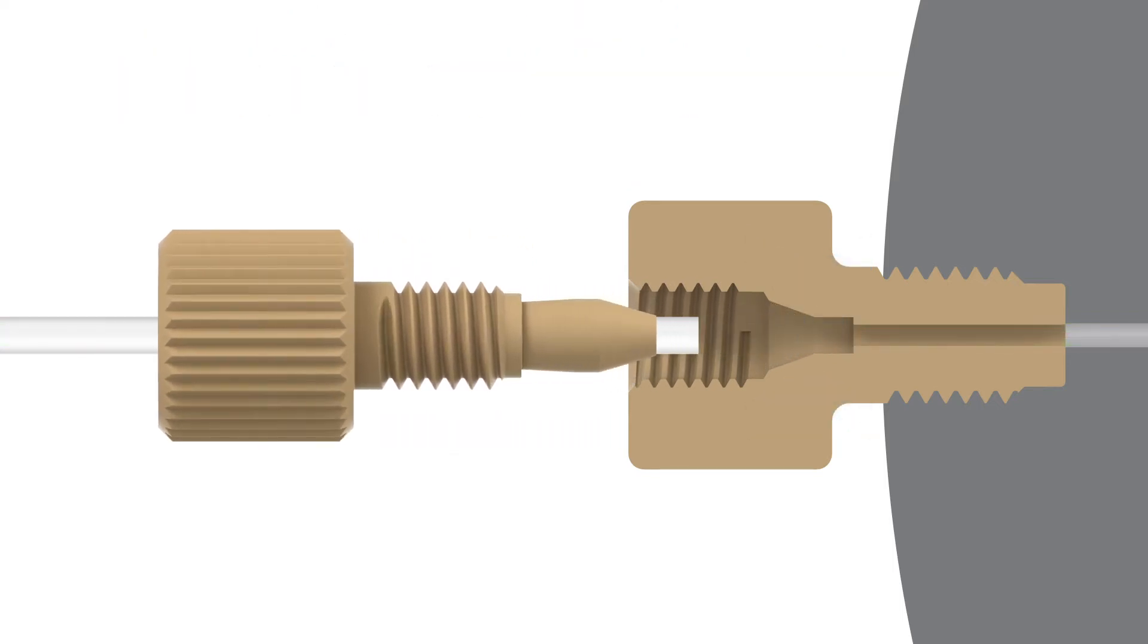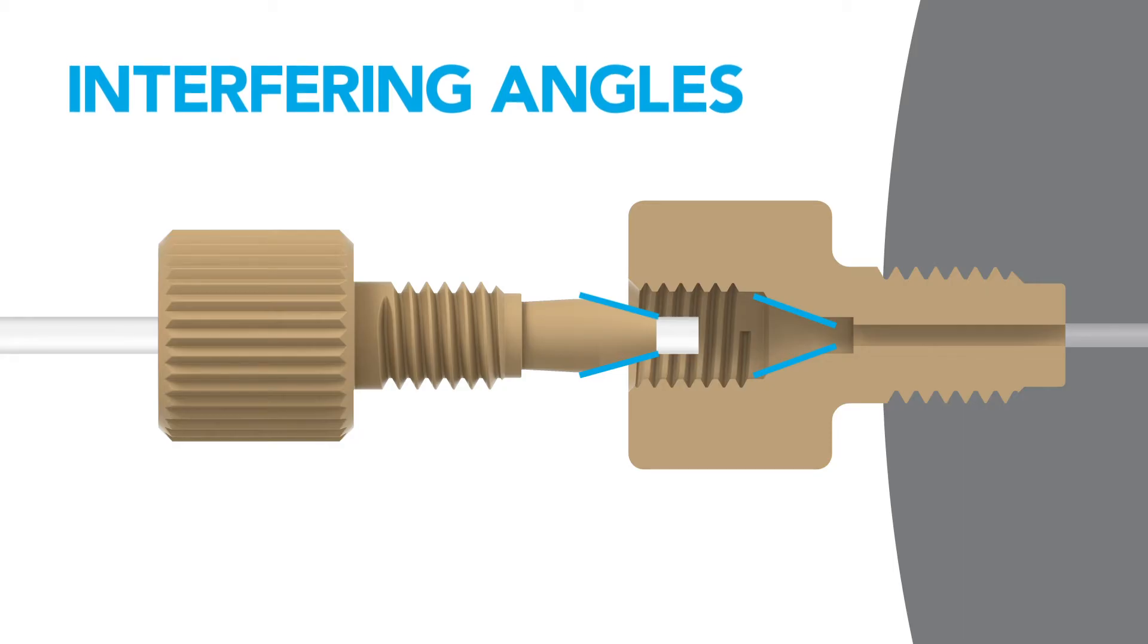This compression is driven by a concept called interfering angles. The primary tapered portion of the ferrule will face the tapered portion of the receiving port.